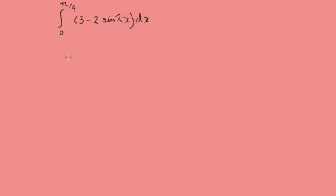This is going to give us 3x. Now, the derivative of sine is minus cosine. We've got a minus here, so that's going to become positive. And a is 2, so 2 over 2, the 2s will cancel out. We'll write them in just for completeness, cosine 2x, and it's between 0 and π/4.